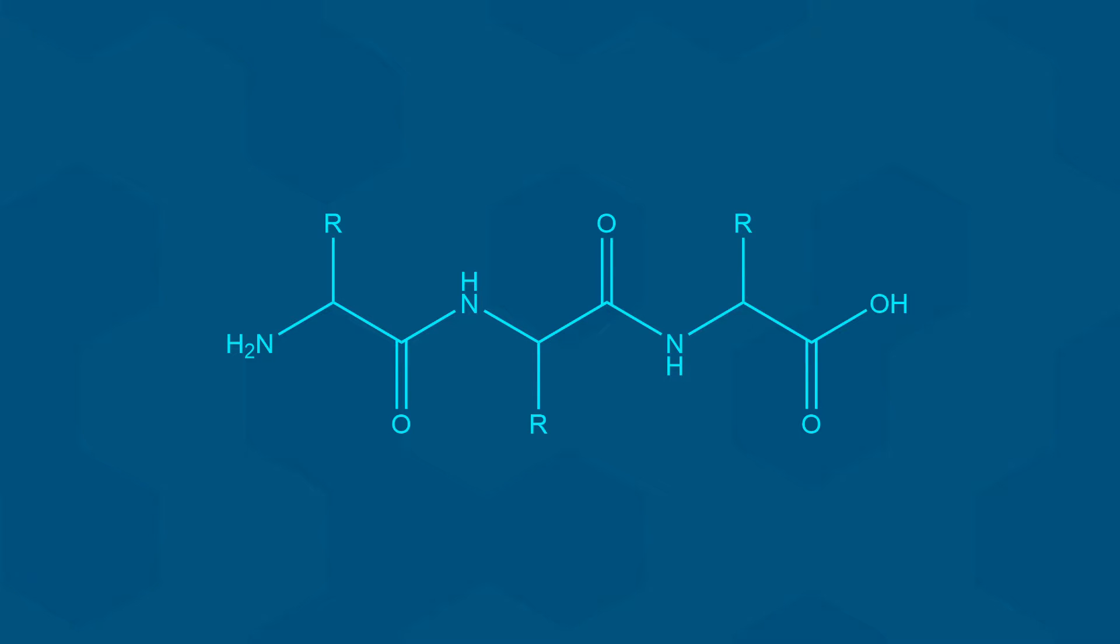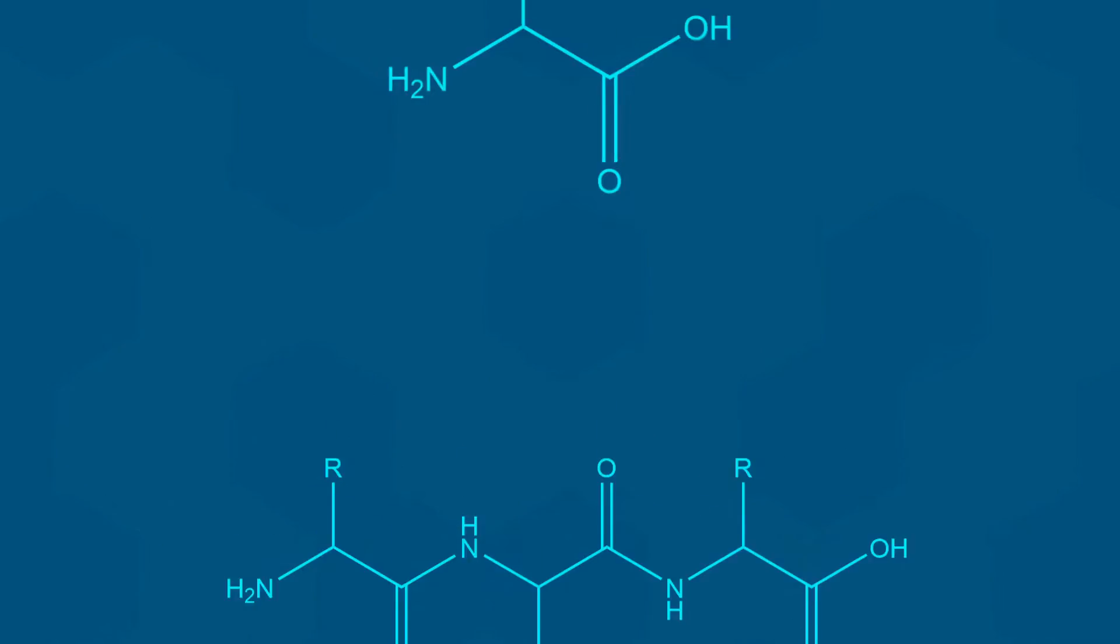In nature, these chains can range in size from only a few amino acids to over 30,000 amino acids in length. However, the average chain length inside cells is about 300 amino acids. Anyway, back to the amino acids themselves.